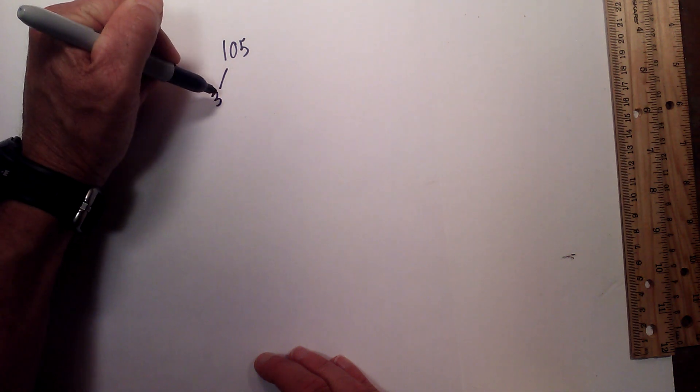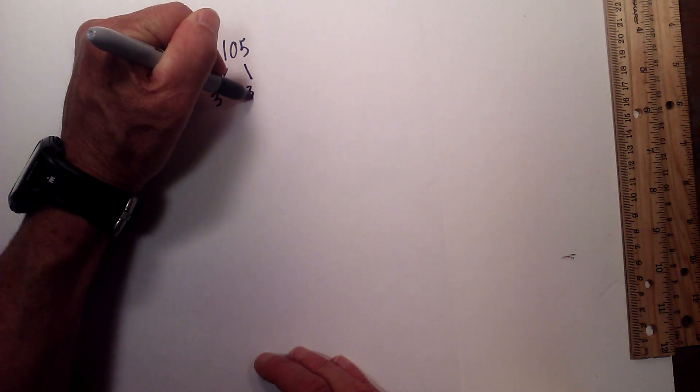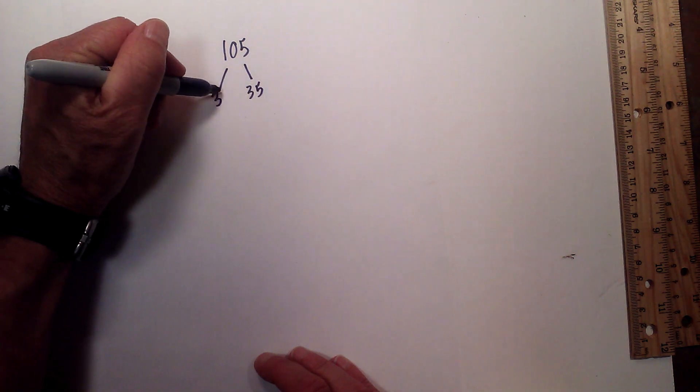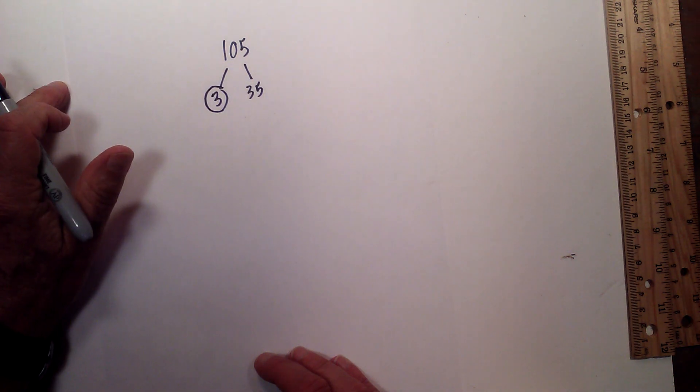First, 3 times 35 equals 105. I will circle the 3 because it is prime.